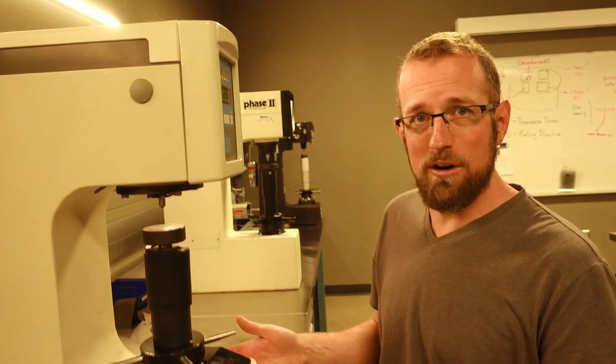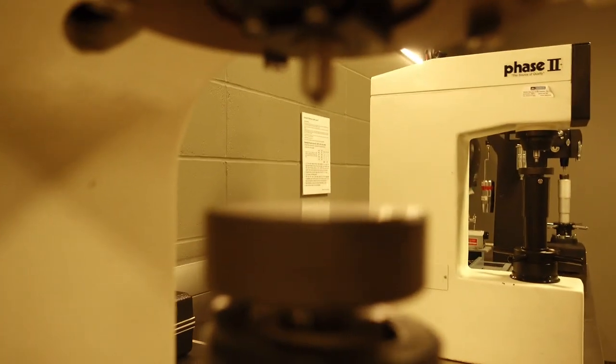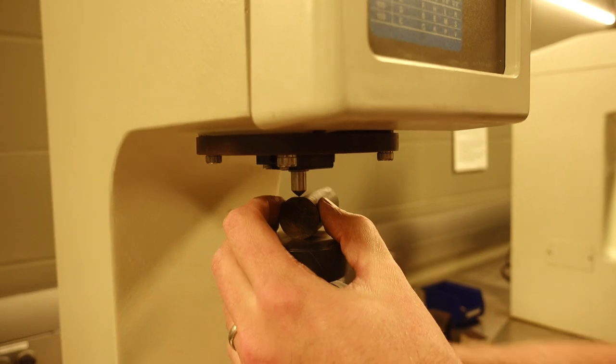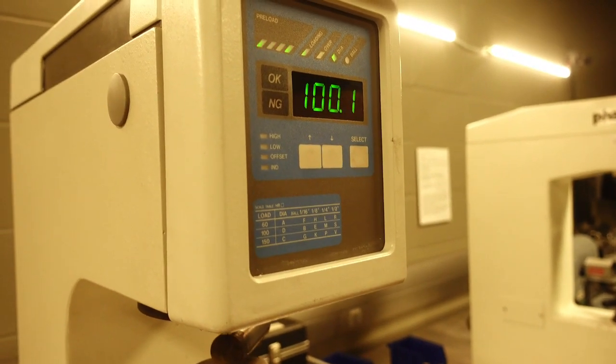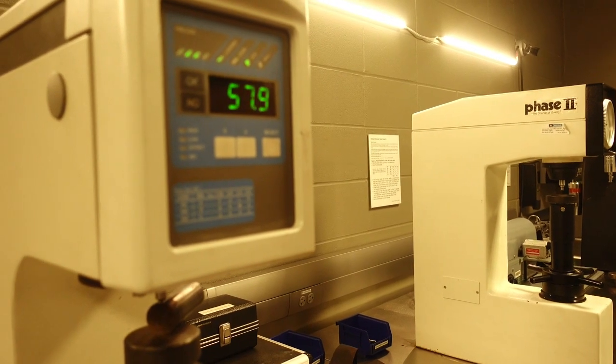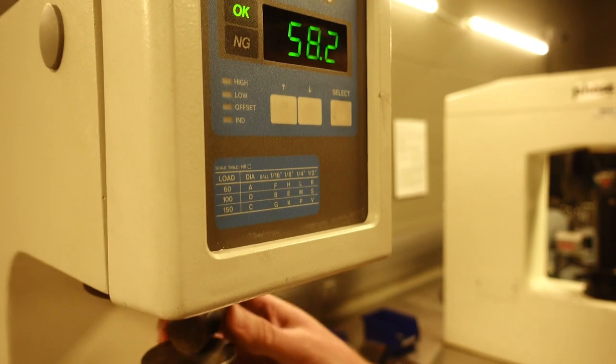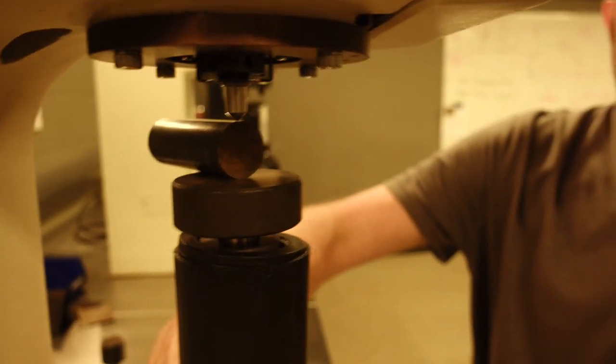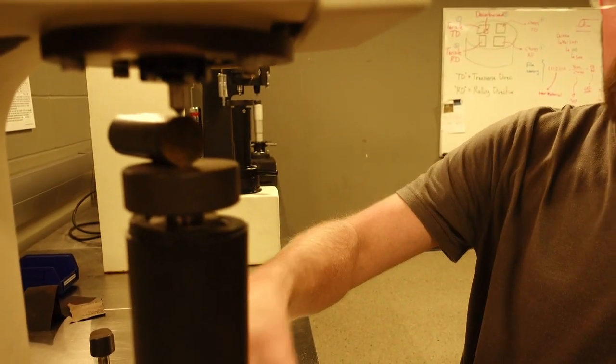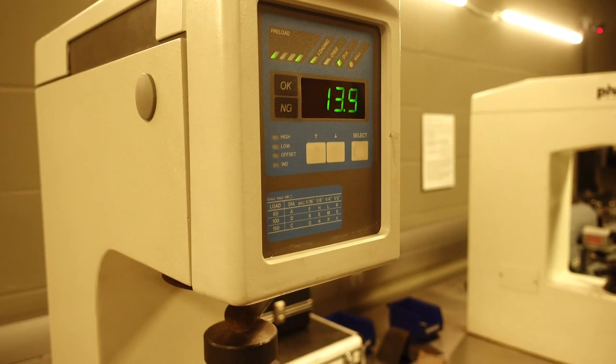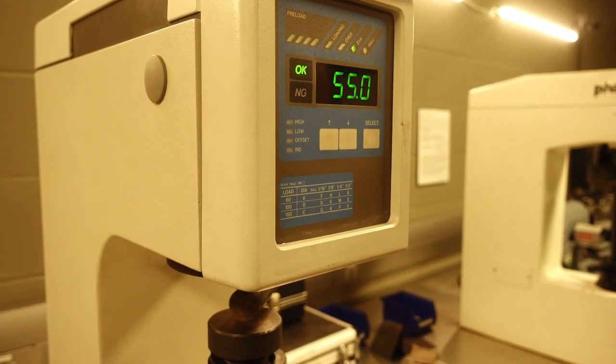This machine here is set up for Rockwell C. We've got a conical indenter, 150 kilogram load. This first indent should give us a high hardness reading since this is probably made of martensite. The indenter goes in and then measures how far back it comes out to measure the hardness. And looks like we're sitting at 58.2 HRC for our first indent. This is a pretty typical martensite hardness for this carbon content. I expect that for the first couple of indents here, we'll continue seeing martensite, and then that martensite will start to fall off.